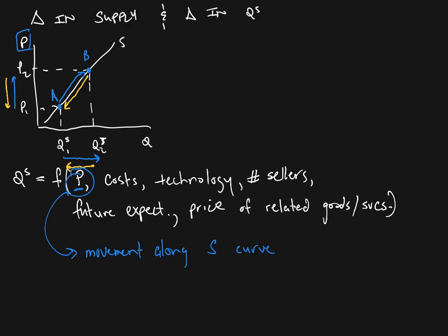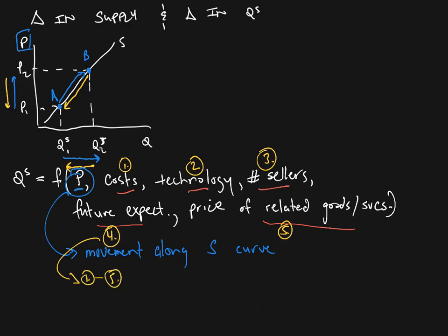So these other things that affect how much sellers want to sell — their costs, the technology that's available, the number of sellers, their future expectations about price, and the prices of related goods and services — these all affect how much sellers want to sell, but they are not going to cause movement along the curve. Since we only have two dimensions with price and quantity already plotted, these things are going to shift the entire curve. We call them the determinants of supply — costs, technology, number of sellers, future expectations about price, and the price of related goods and services — and changes in these are going to cause a shift in the supply curve itself.